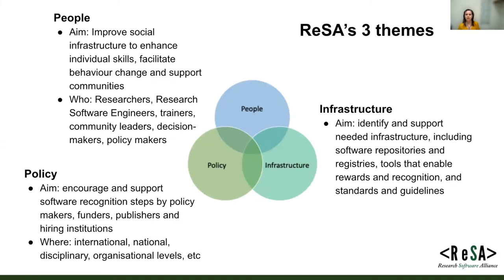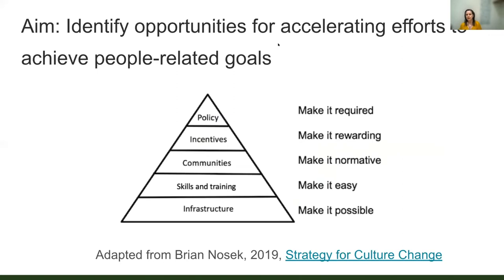ReSA works across three themes: people, policy, and infrastructure. The People Roadmap is a way of framing questions to do with the people theme. When we thought about how to break down what the people theme means, we decided to adapt a fantastic strategy for culture change from Brian Nosek at the Centre for Open Science, identifying five areas that are needed in a people-themed area — which you could apply to other themes as well.